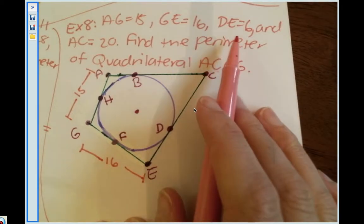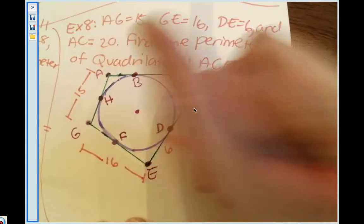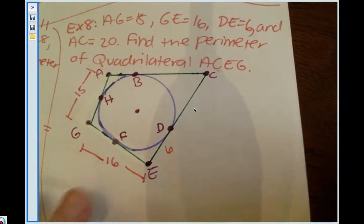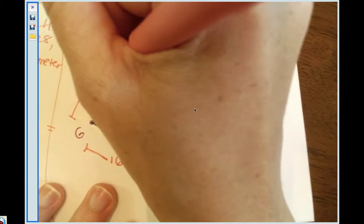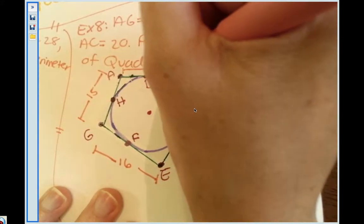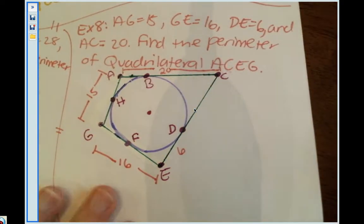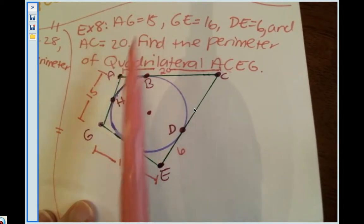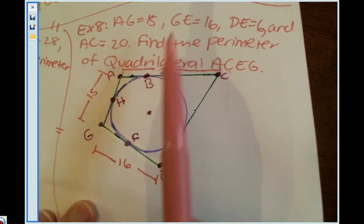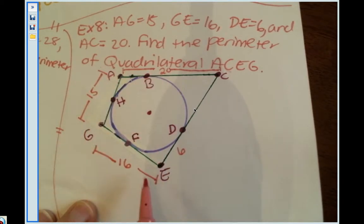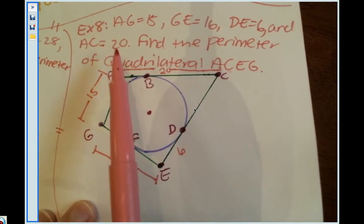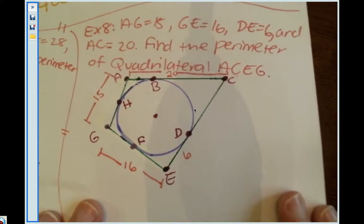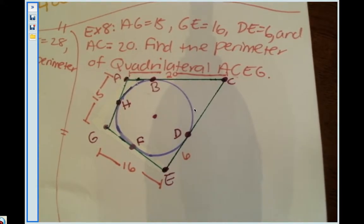D to the E is 6 and A to the C is 20. All right, so we need to find the lengths of all these different pieces. Let me check - AG is 15, GE is 16, DE is 6. Yeah, we got enough information, just making sure.